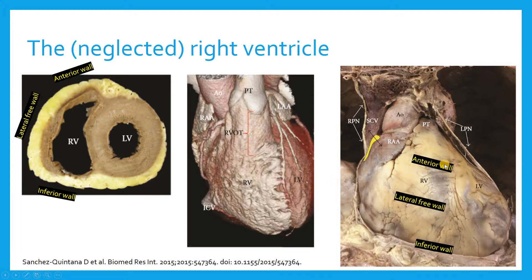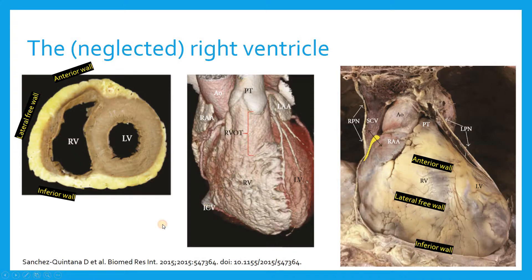When we look at it from the anterior surface, this is all the anterior wall. The lateral free wall sits out a little bit more. The inferior wall is what abuts the diaphragm, and that's really what you're going to see in your subcostal view, which is what we're going to look at here.